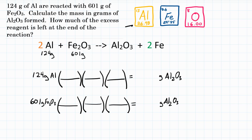Since we're dealing with aluminum, looking at the periodic table, the molar mass is 26.98 grams. So 26.98 grams goes on the bottom — that's the amount for one mole of aluminum. Grams of aluminum cancel and we're at moles of aluminum. We want to turn moles of aluminum into moles of Al₂O₃ using mole ratios. The mole ratio for aluminum is 2, and the mole ratio for Al₂O₃ is 1 — those coefficients are what go into our second step.